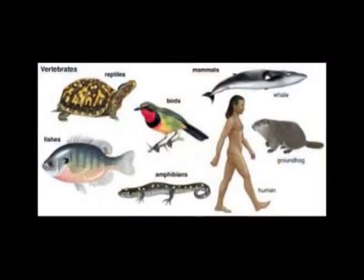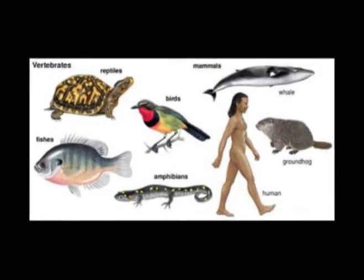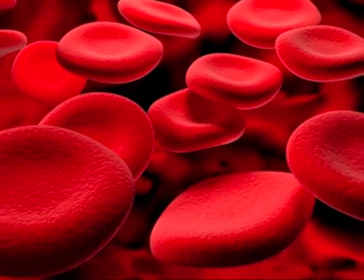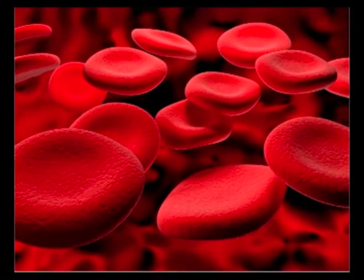Today's discussion is on serology — an introduction to the ABO and RH blood group systems. Before we go into those, let us consider what blood is. Blood is a specialized body fluid in animals that delivers necessary substances such as nutrients and oxygen to cells, and transports metabolic waste products away from those same cells. In vertebrates, it is composed of blood cells suspended in a liquid called blood plasma. Vertebrate blood is bright red when its hemoglobin is oxygenated.